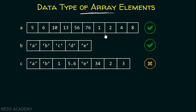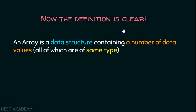Either an array consists of all integers, all characters, all floats, all doubles, or any single type you can imagine. But it is not possible that an array consists of multiple types of elements. So the full definition is clear: an array is a data structure containing a number of data values, all of which are of the same type, organized and stored in a structured format.